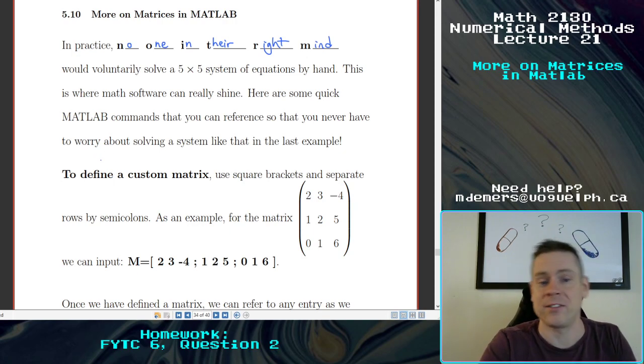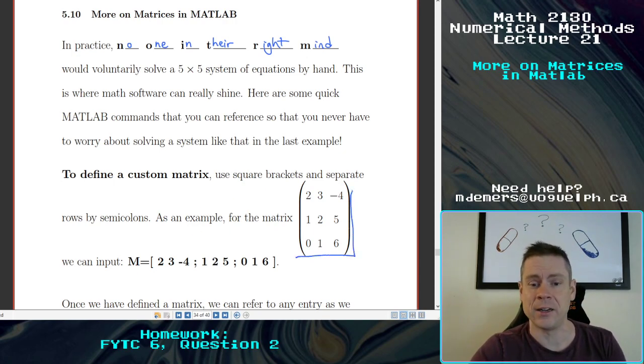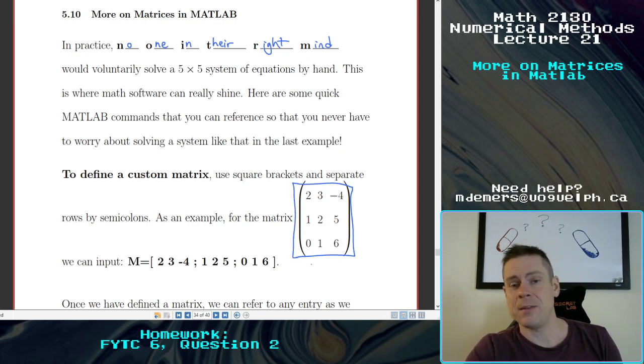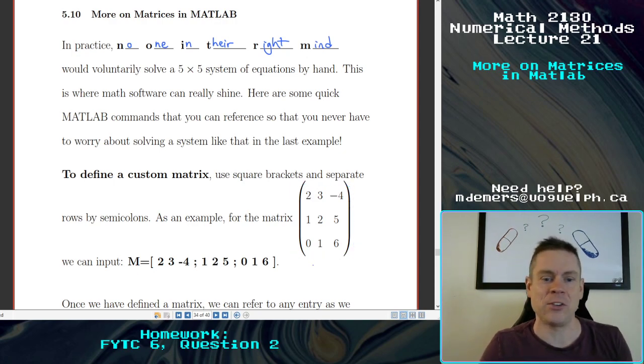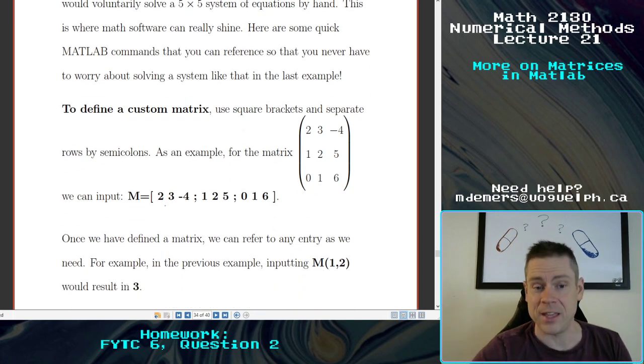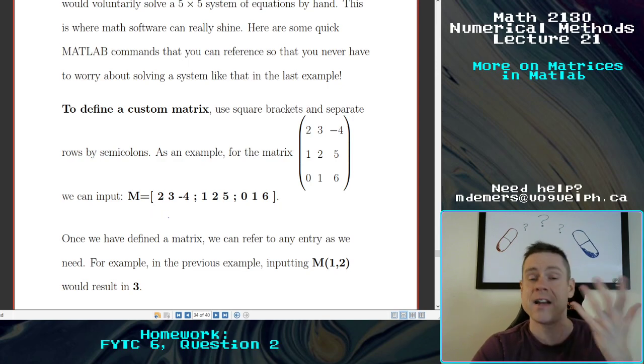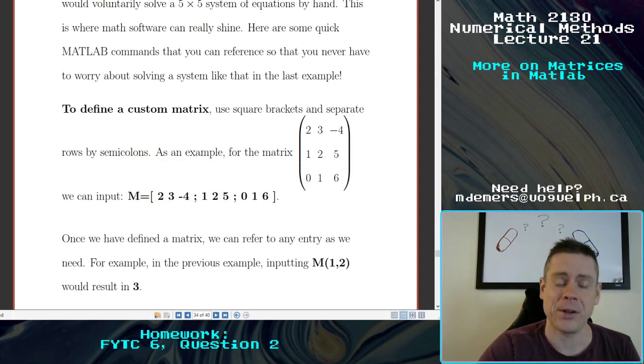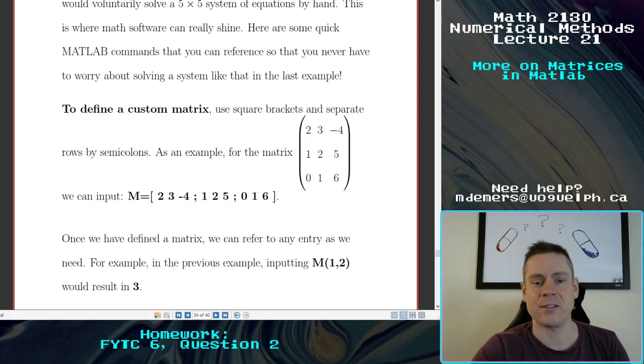But you can actually define a whole custom matrix at once. And that's where I want to start here. So to define a custom matrix, what you want to use is square brackets and semicolons. So if you want to program this matrix right here, I need something to name it. I tend to like using capital letters for matrices, because that's what we often use in math. But you can input this into MATLAB, and this will define all nine entries of the matrix at once. So you would say capital M equals, and then in square brackets, separated by semicolons each row: 2 3 -4; 1 2 5; 0 1 6. Just like this.